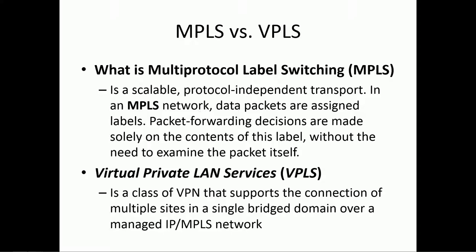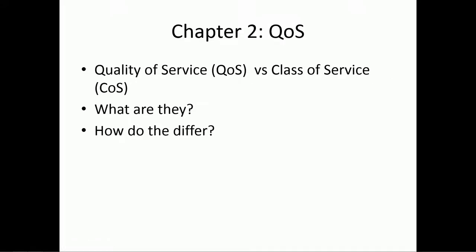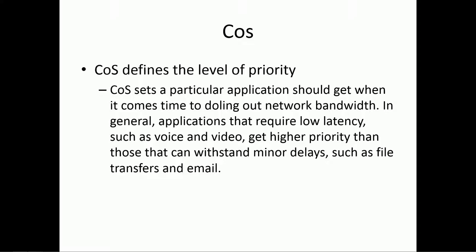Chapter two is more about quality of service — QoS and class of service, or CoS. What are they and how do they differ? Class of service sets what priority a particular application should get when using bandwidth. You can set priority as high, medium, low, or a numerical value. The QoS actually provides that priority.